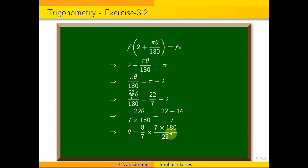Cancel 7. Then 8 and 22: that's 4 times 11. Multiply 180 by 4 to get 720/11 degrees. Now, what do we do? Minutes and seconds.